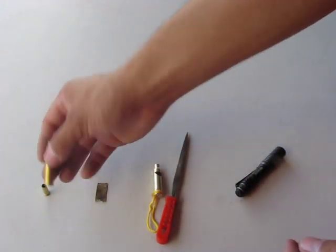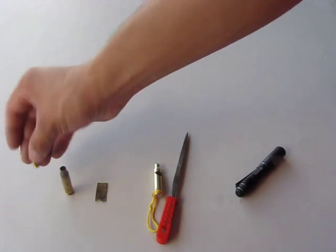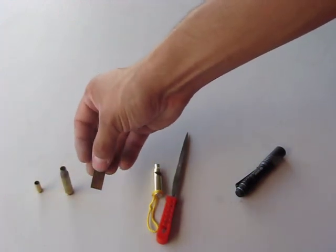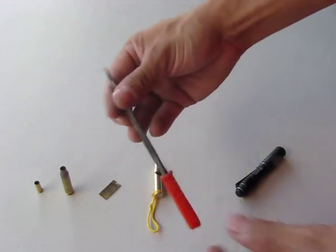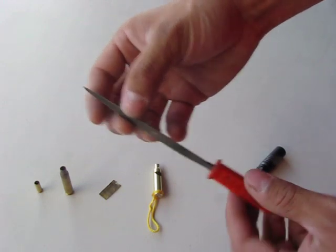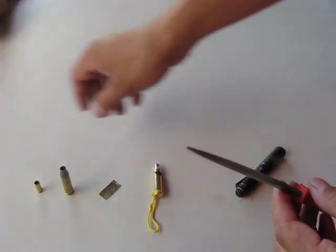You'll need a 223 bullet shell, a 22 bullet shell, and a scrap piece of brass, which you can get from another shell. For tools, you'll need a triangle file. This is a quarter inch on the sides, and also some soldering and a soldering setup.